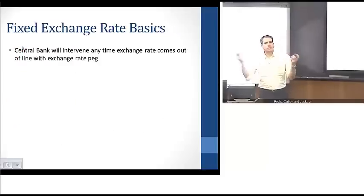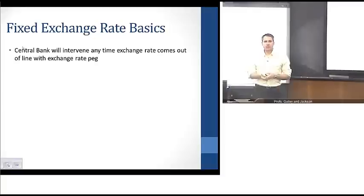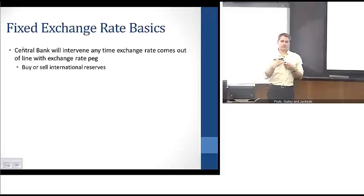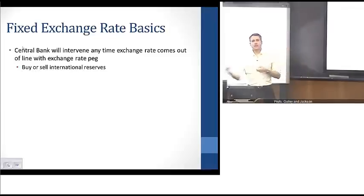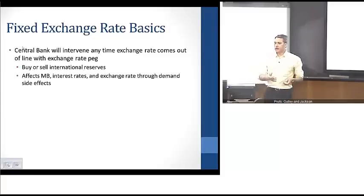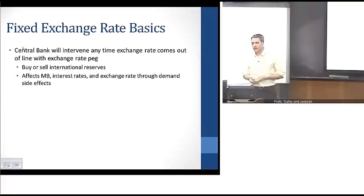We're going to focus on fixed exchange rates, since floating rates are straightforward — they're market driven. For fixed exchange rates, the mechanics are such that the central bank intervenes any time the exchange rate comes out of alignment with its peg. It does this by buying or selling international reserves — stores of foreign-denominated currency — to move exchange rates. This process affects the monetary base, impacts interest rates, and thereby affects exchange rate movements through changes in demand for domestically denominated assets relative to foreign assets.